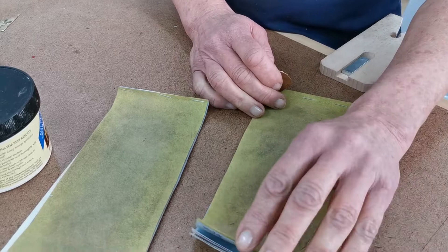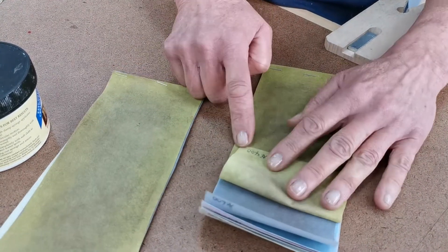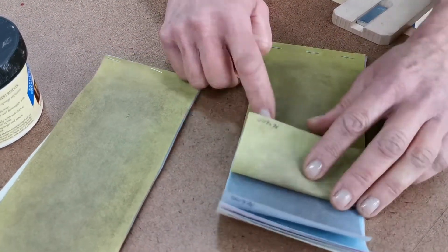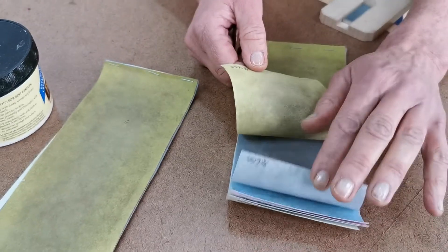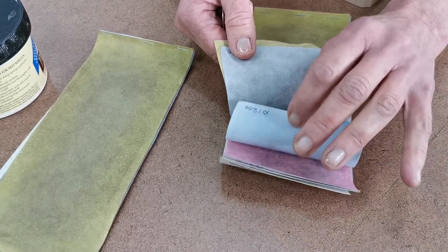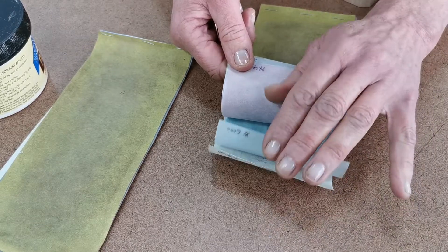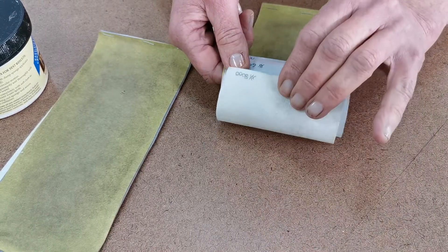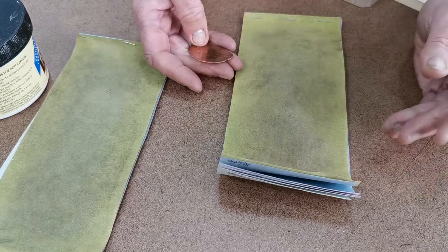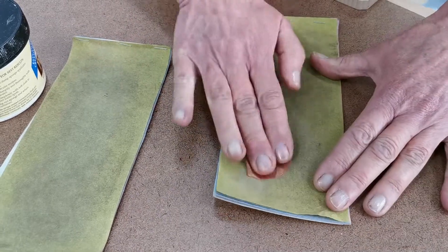You can hand polish with these little sample pads. They start with 400 grit just like sandpaper, then 600, getting more fine: 1200, 4000, 6000, and 8000. You start with the coarsest and simply rub on these.